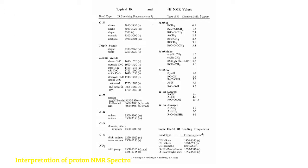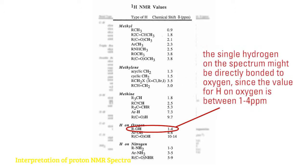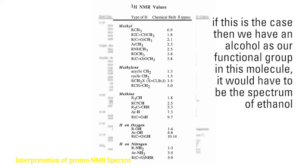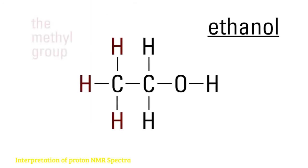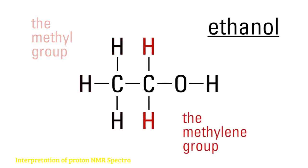Now, let's look at the table and determine what information can be gathered from the chemical shifts. The single hydrogen on our spectrum might be directly bonded to oxygen since the value for H on oxygen is between 1 to 4 ppm. If this is the case, then we have an alcohol as our functional group in this molecule, and it would have to be the spectrum of ethanol. As you can see, ethanol has a group of three hydrogens, the methyl group, and a group of two hydrogens, the methylene group.